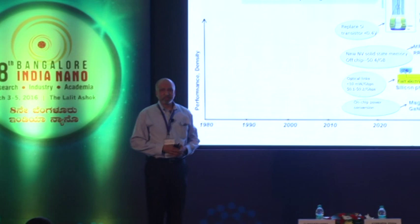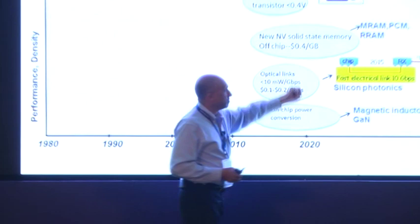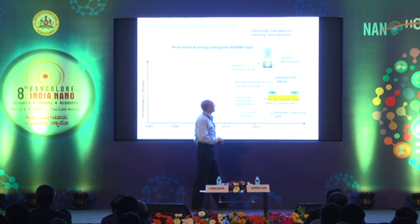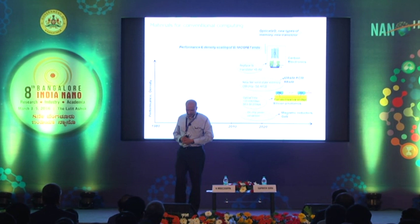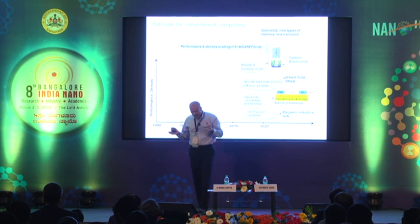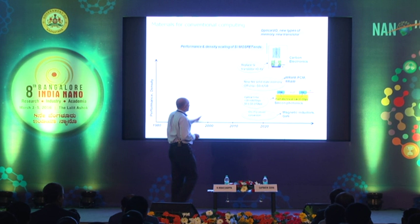The memory will have to be cheap. Optical links will replace electrical links because of cost and power issues. There will be on-chip power conversion with things like magnetic inductors and gallium nitride technology. And there is tremendous interest in trying to find a replacement for the silicon transistor — chips that can operate at voltages less than about 0.4 or 0.5 volts. Today you work at about 0.7 to 0.8 volts minimum, but you want to go down below about half a volt. So there's a lot of interest in trying to replace silicon with a drop-in replacement.